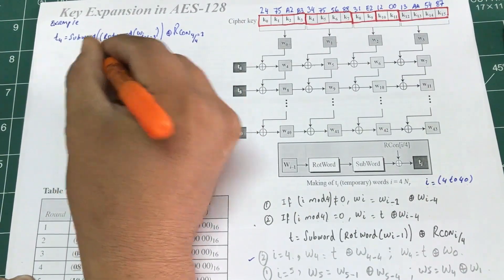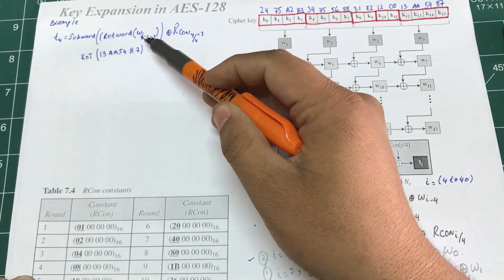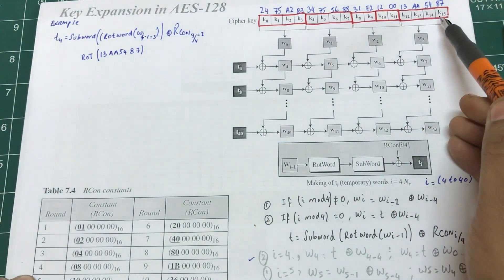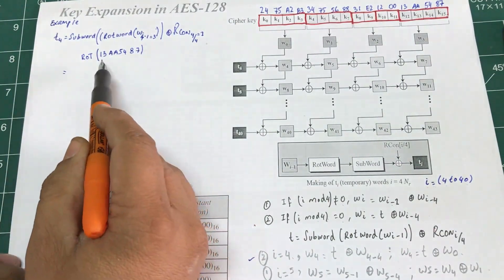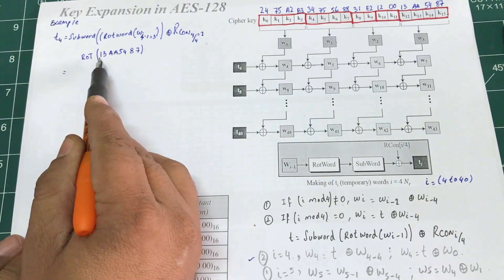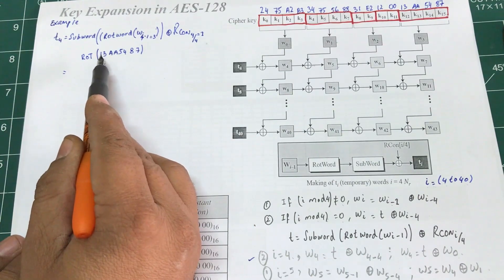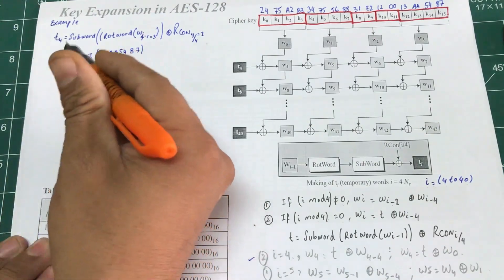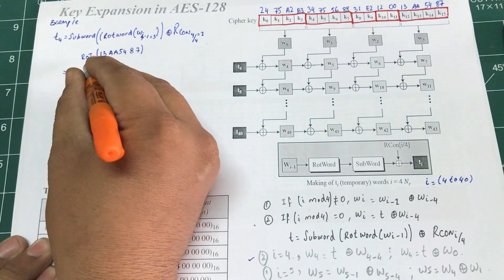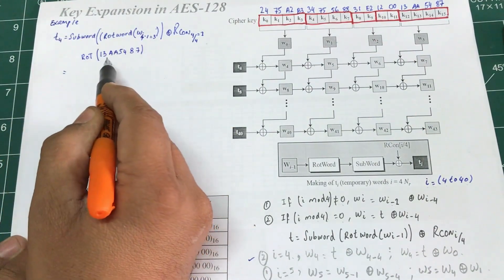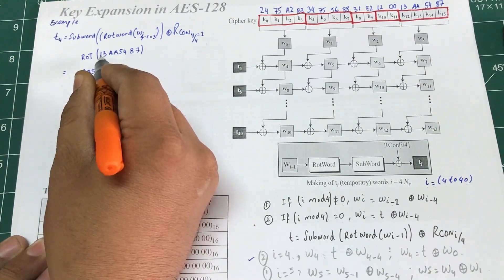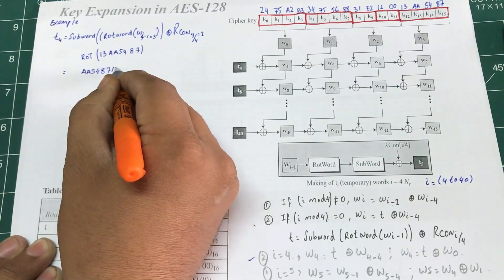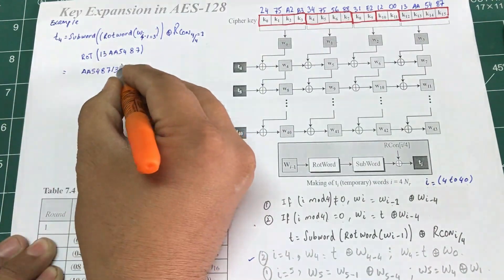I'm going to rotate them. In place of W_{i-1}, which is W3, I pick up these values and rotate them. Rotating means shifting an entire byte to the left — this byte gets shifted left. After rotating 13AA5487, the result becomes AA548713.